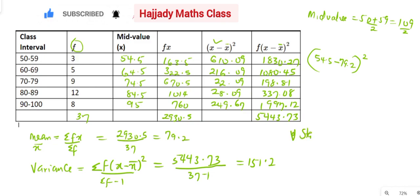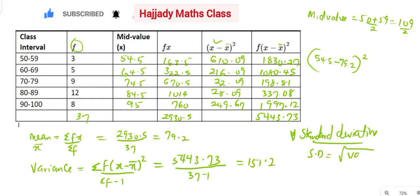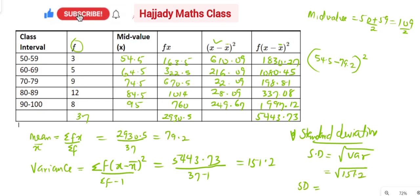Lastly, we get the standard deviation. Our standard deviation, SD, is the same as the square root of our variance, which is the square root of 451.2, and my standard deviation is going to be 12.3.